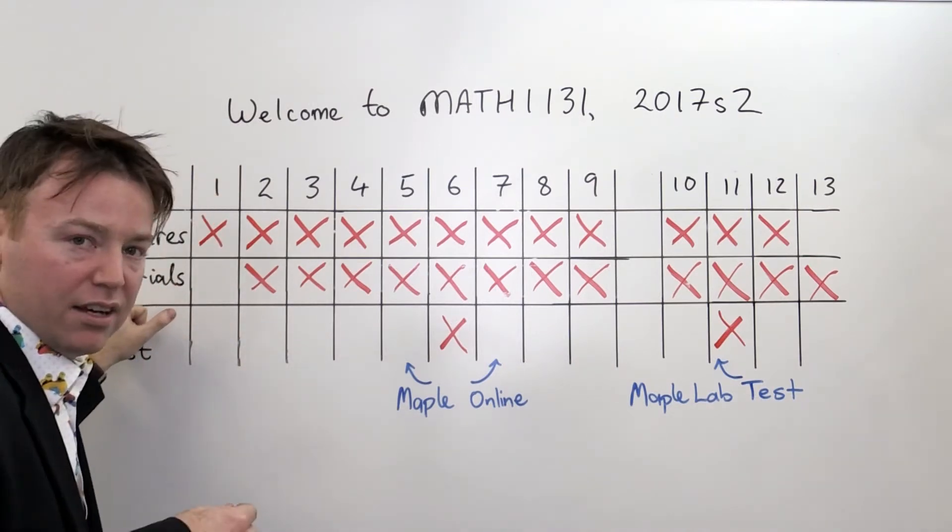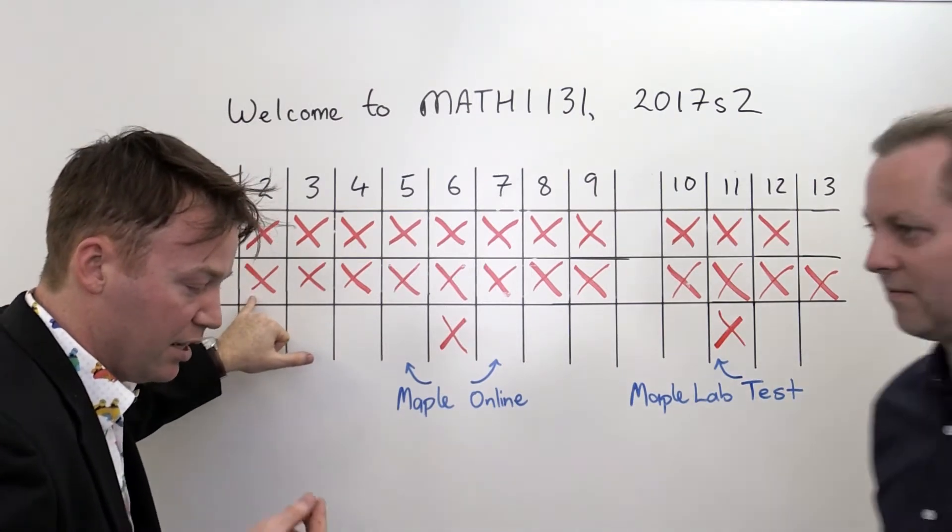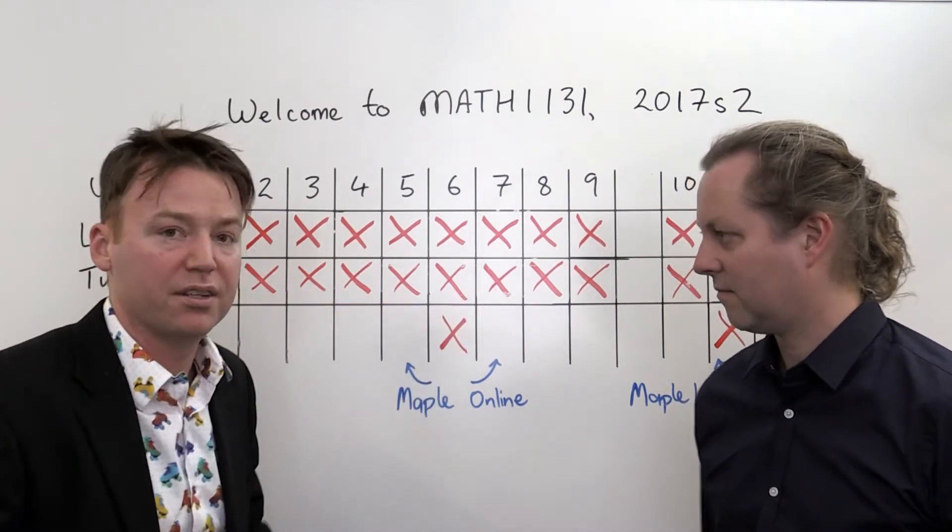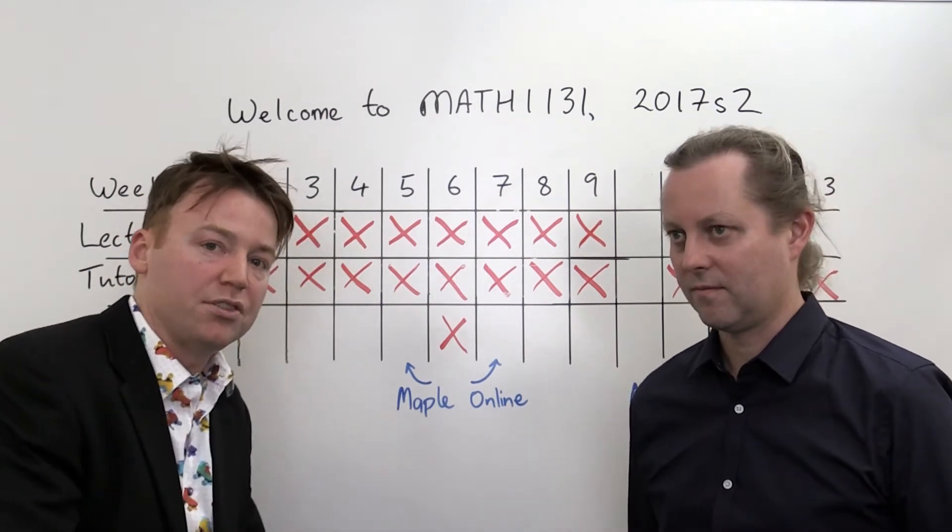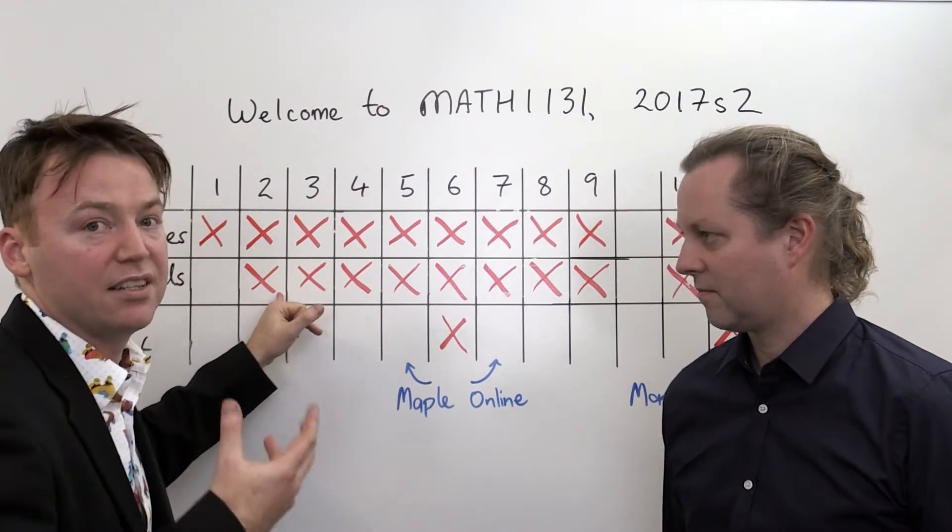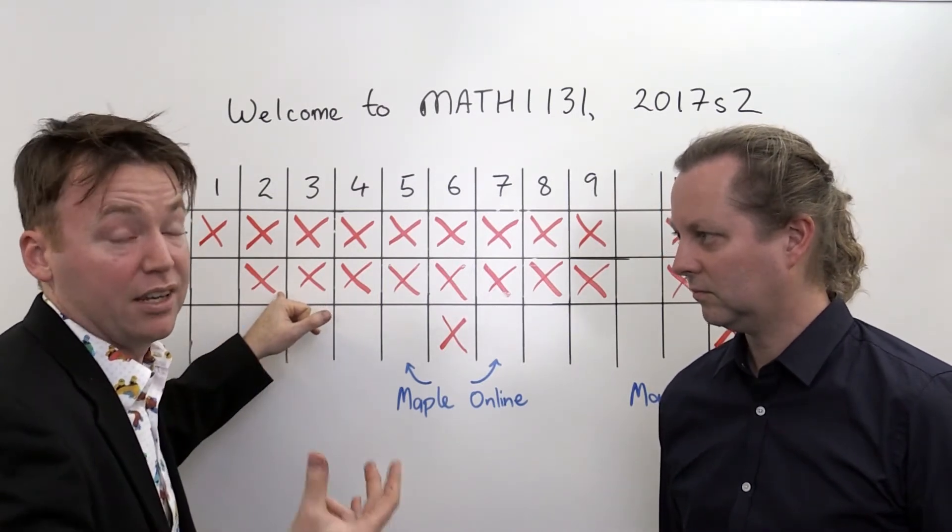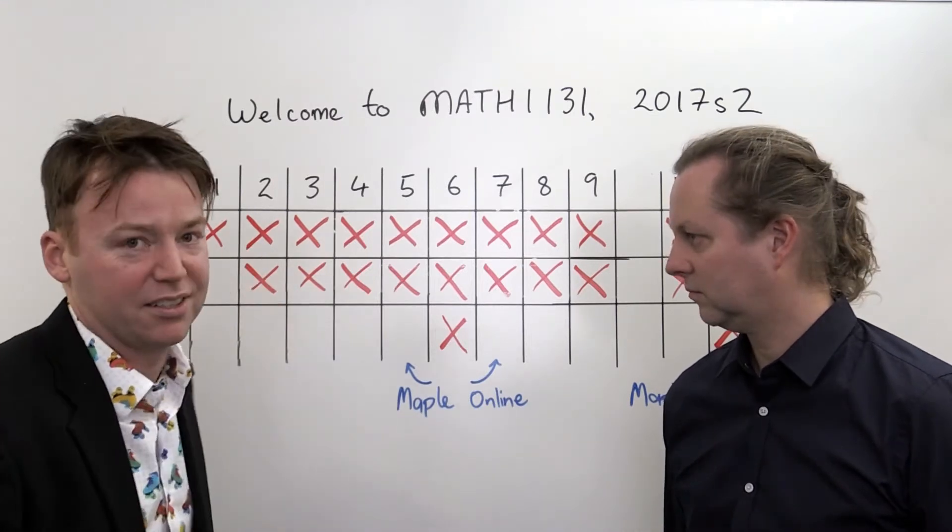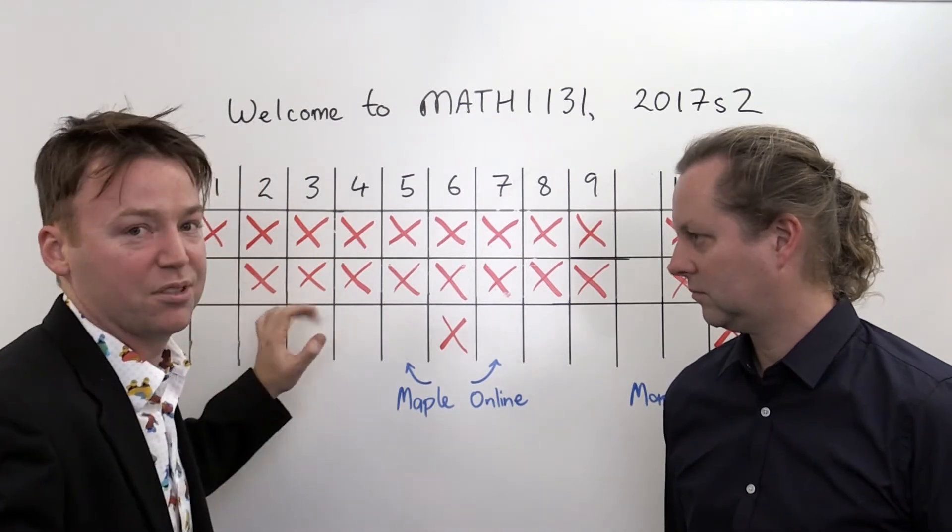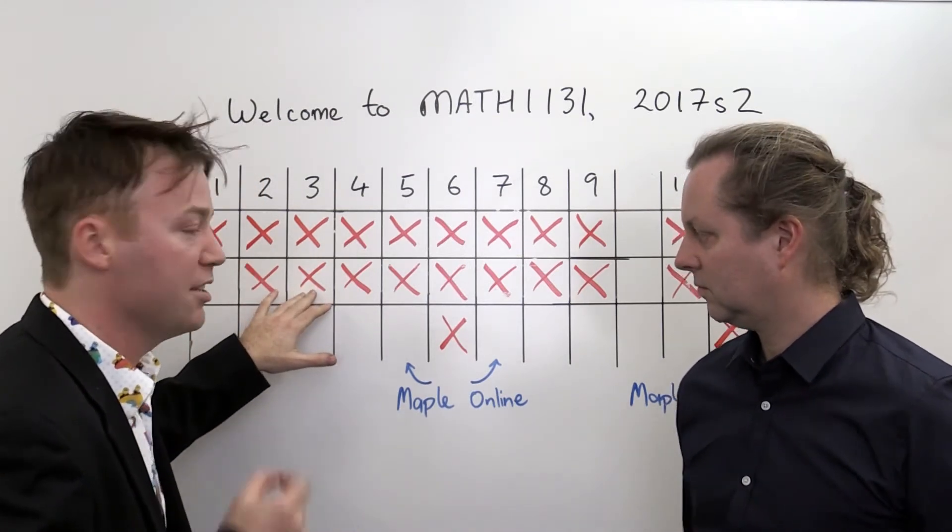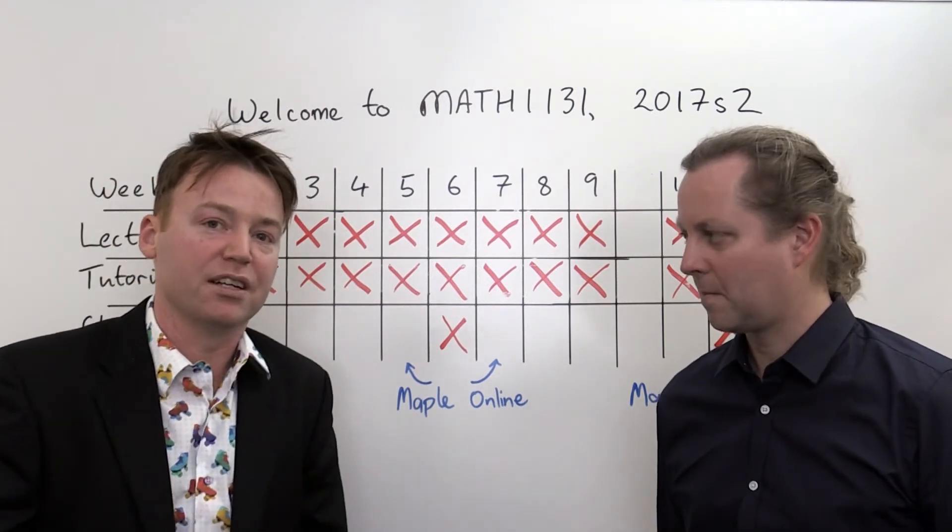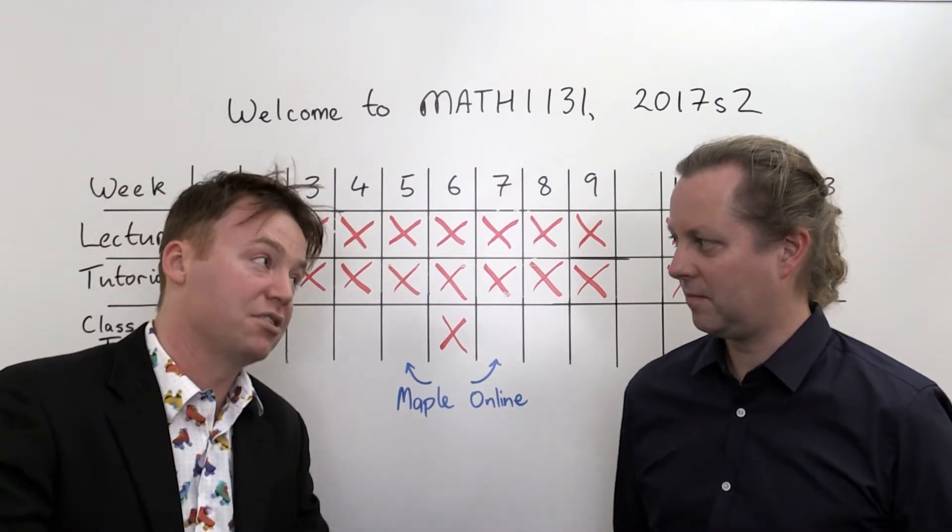In your tutorials, the classroom tutorials will start with a calculus tutorial and then alternate calculus to algebra, calculus, algebra, calculus, algebra. There are also these things called online tutorials, which are due on Sunday nights, starting in week two. So you have an algebra online tutorial to accompany your calculus classroom tutorial. So everything is nice and harmoniously balanced. These also alternate. So you have an algebra classroom tutorial and a calculus online tutorial in week three and so on.